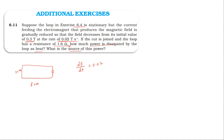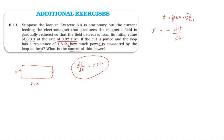What is the source of this heat dissipated in the loop?